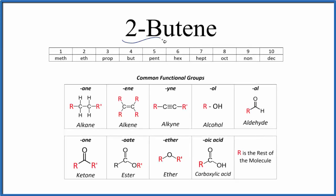Let's write the structural formula for 2-butene. So for 2-butene, the molecular formula is C4H8.